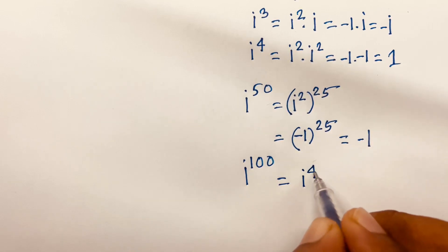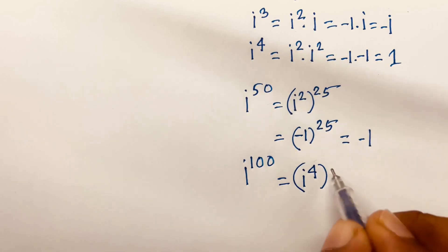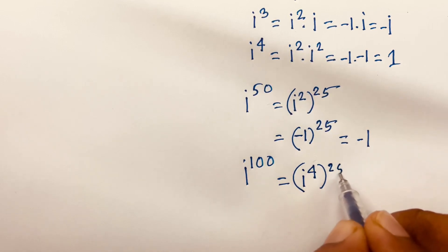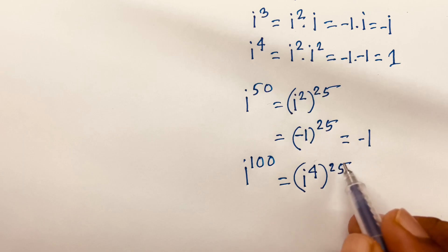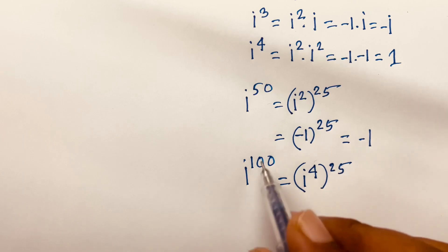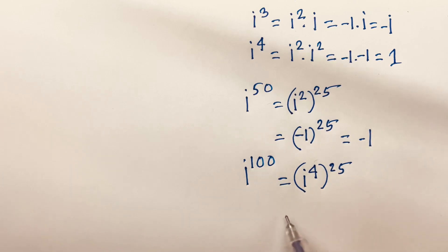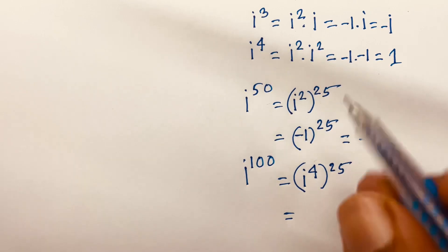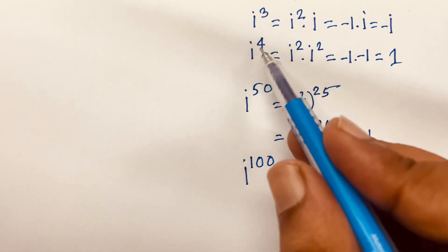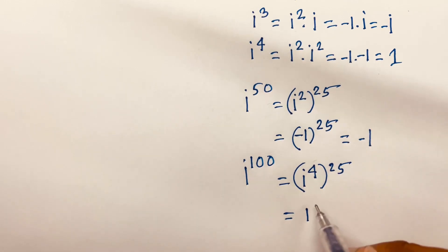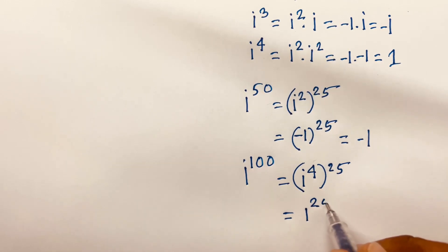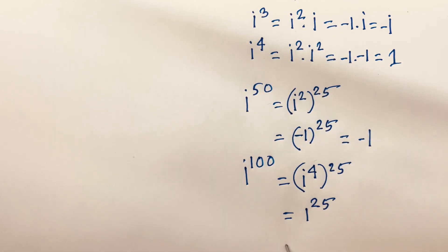And i to the power 100 equals (i⁴)^25, because 4 times 25 equals 100. Since i⁴ = 1, this becomes 1^25, which equals 1.